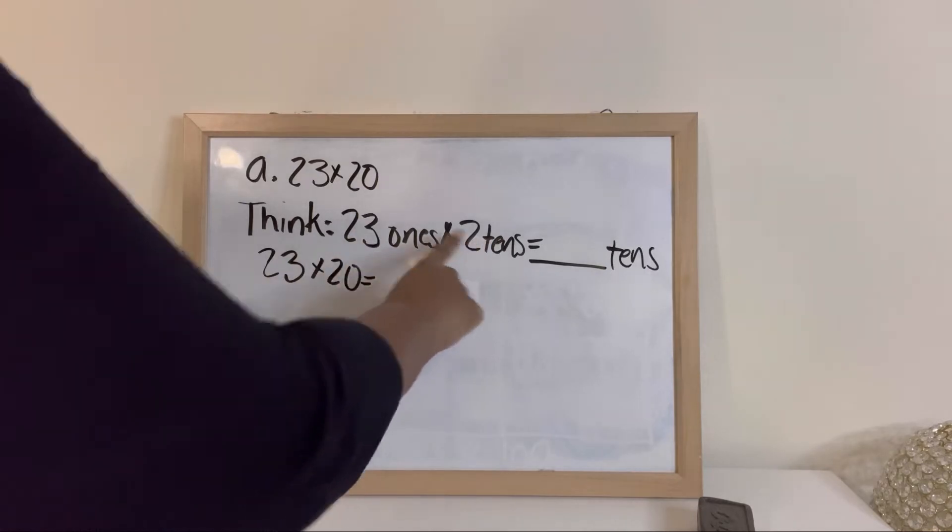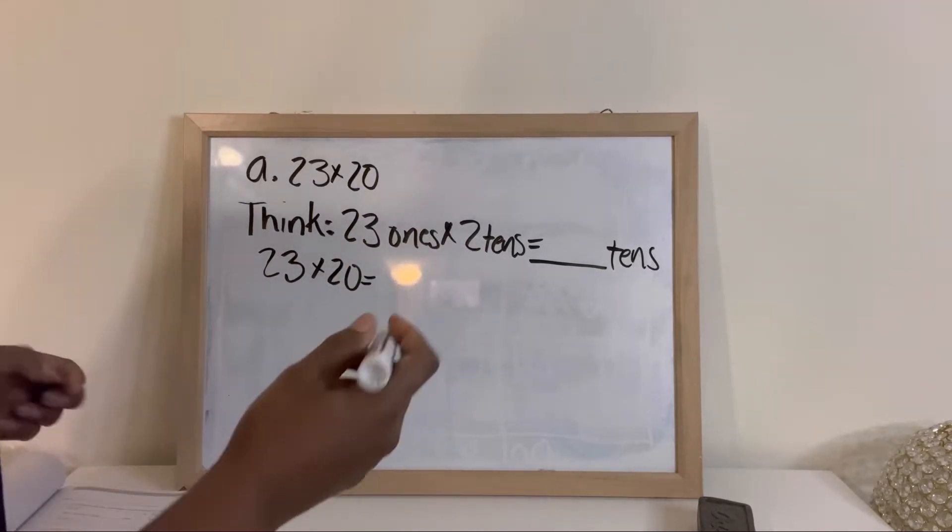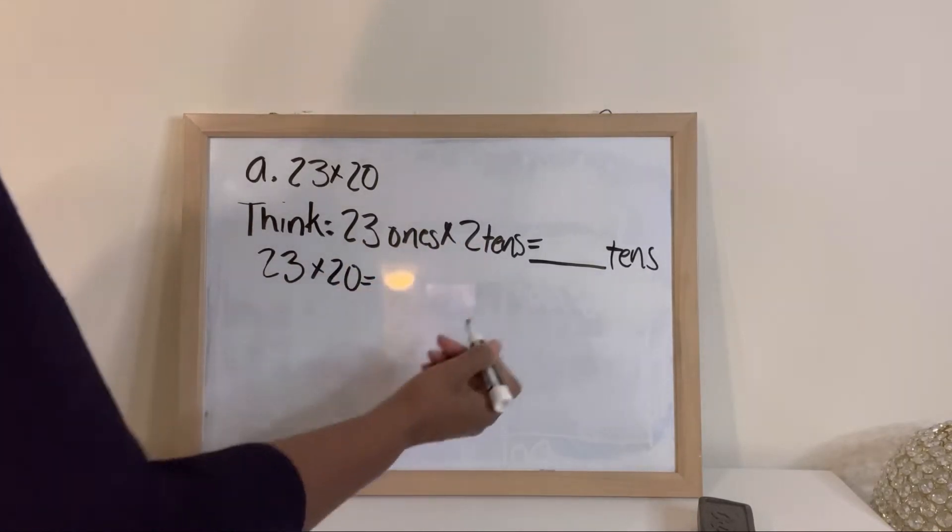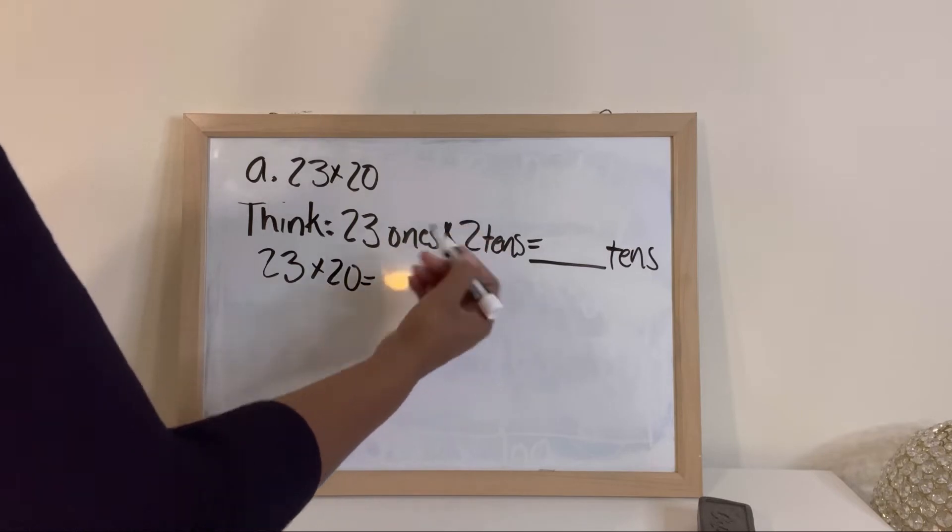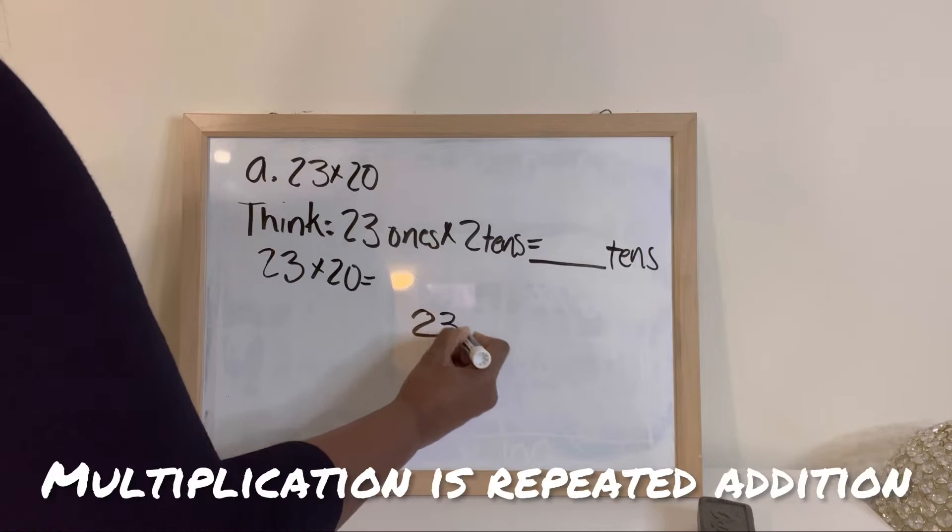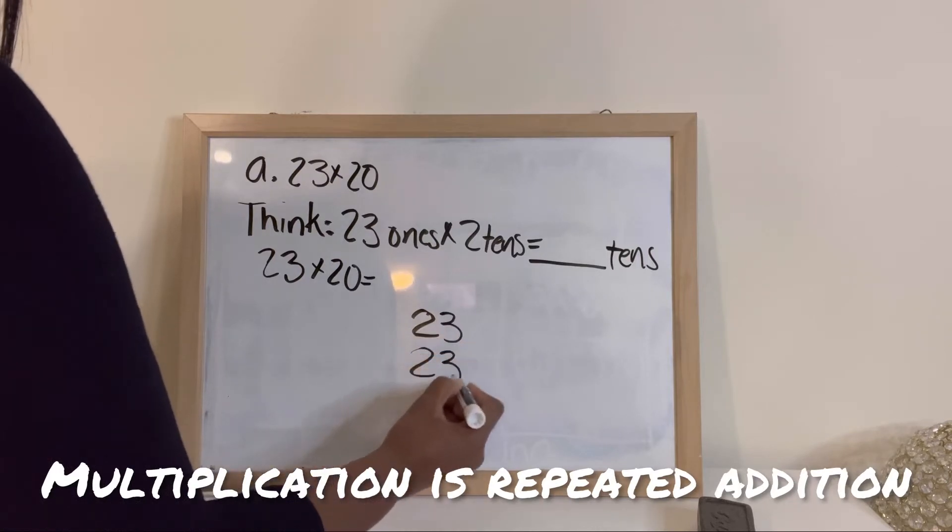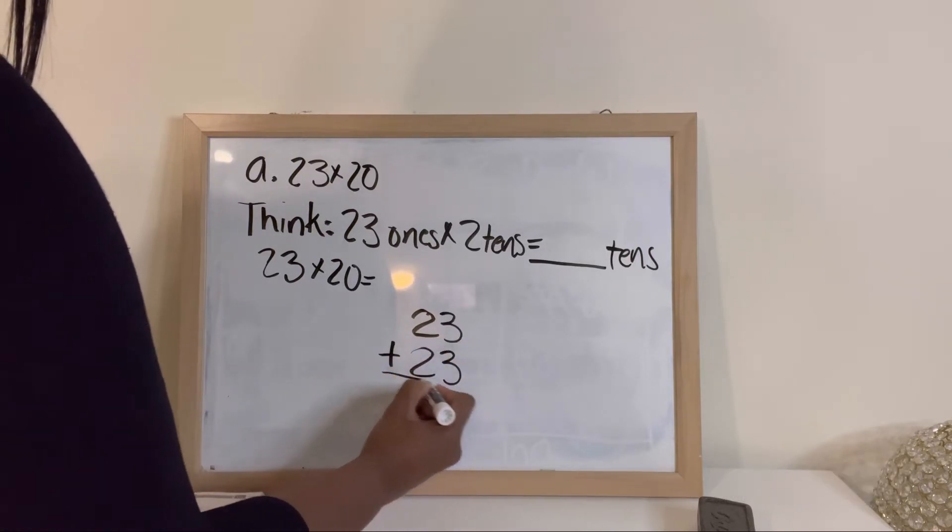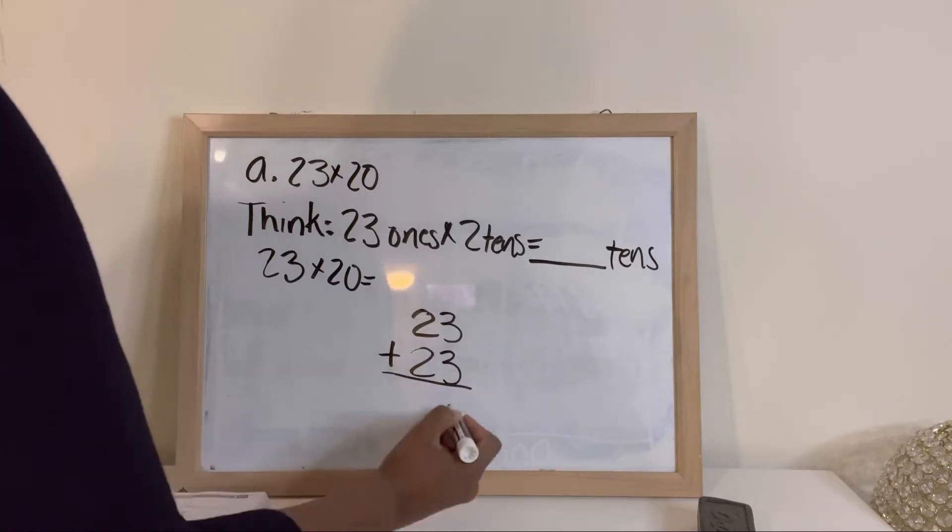So we have 23 times 2. You could think of 23 times 2 as two copies of 23. Okay, and we will add them up.